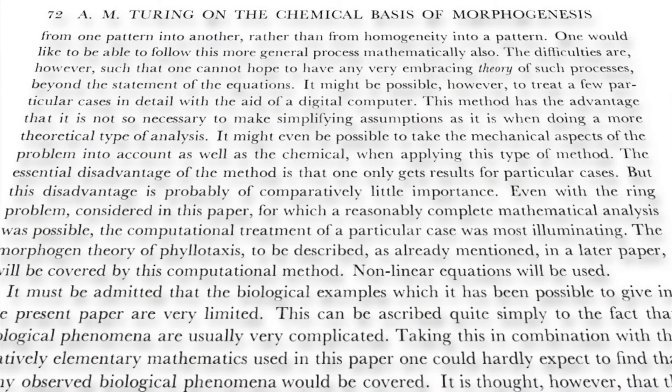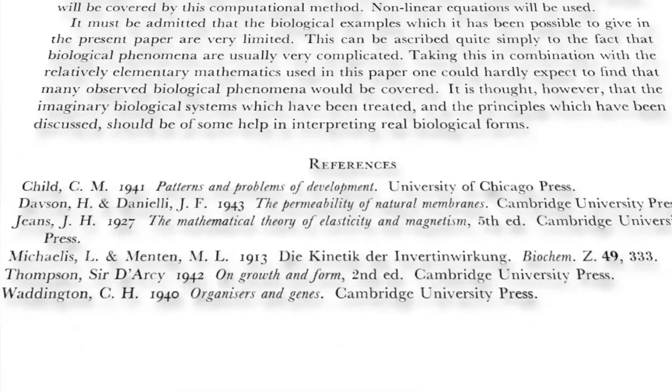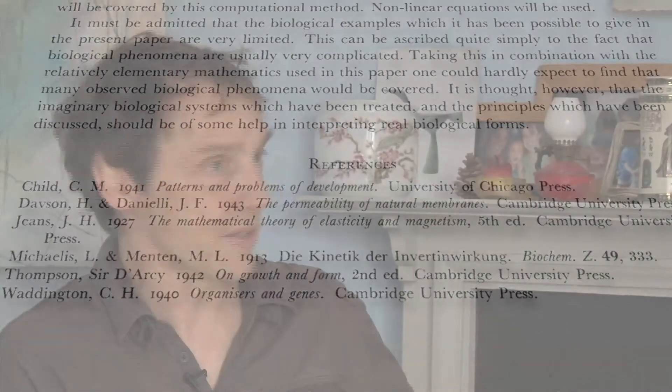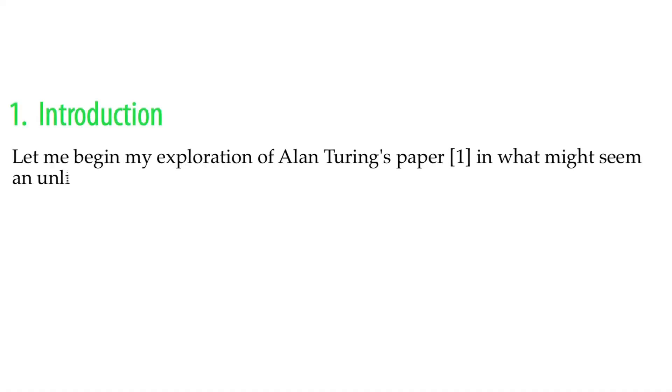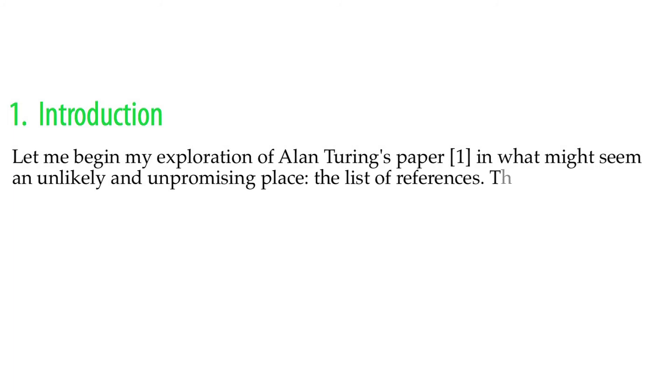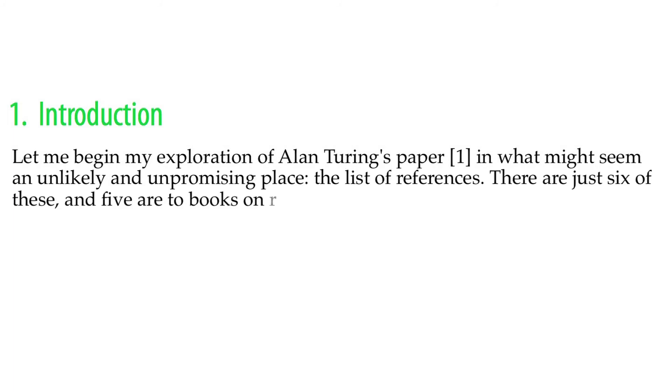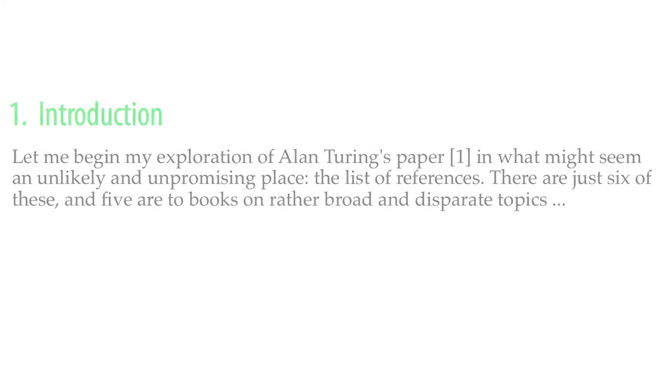One of the first things I noticed was that there were so few references — I think there were maybe only six or so. In some respects the fact that there were so few of them is a reflection of the times, when it didn't matter quite so much to list all your precedents. But it was really also a reflection of the fact that no one had thought about the problem this way before. So I began my discussion by looking at the references, which seems like maybe an odd place to start, but it seemed to me that that was a reflection of how groundbreaking it was — that Turing had found a new way to talk about a problem, and that there really wasn't anything previously that had looked at it this way.